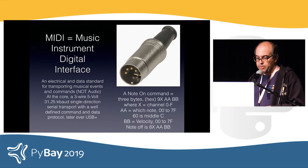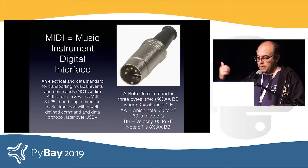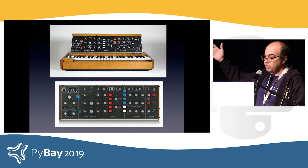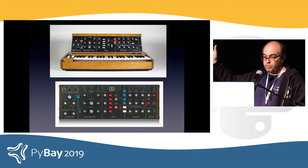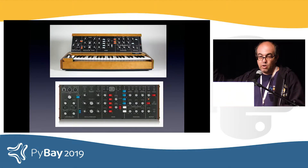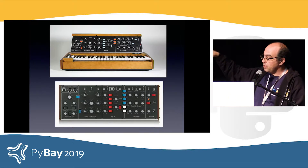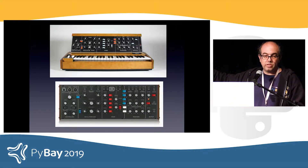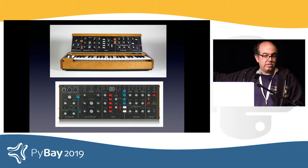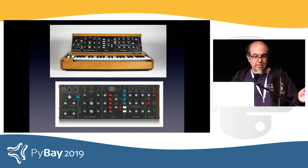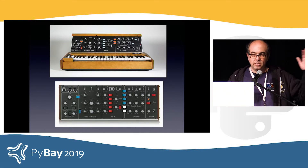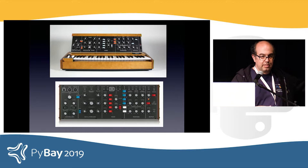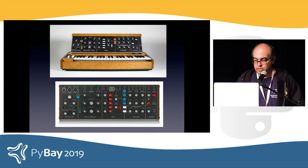This is a Mini Moog — you can get them used now for anywhere from three to six thousand dollars. Or you can go out and get a Behringer Model D, which is the exact same circuitry for $300. And if you had a time machine and could go back to last night, you would see me playing with one on a table out in the makerspace.